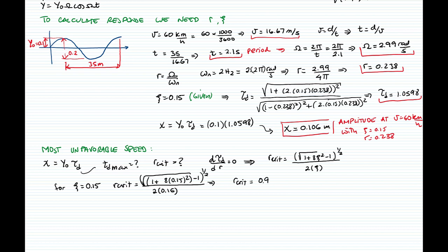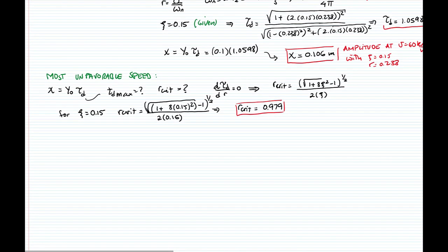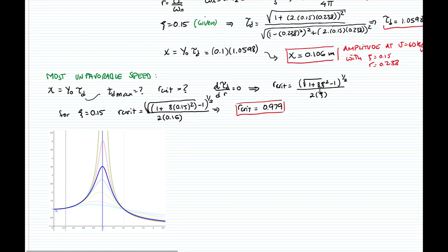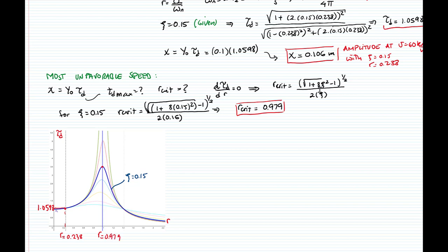We don't need the graph to solve the problem, but the graph is a very useful tool to see what is happening. Here I graph the function for the transmissibility factor, and the blue line represents it for ζ = 0.15. We already found the value for τ for r = 0.238, and as you can see, the maximum value occurs at r = 0.979. This is the value we call τ_max, the maximum coefficient of transmissibility.